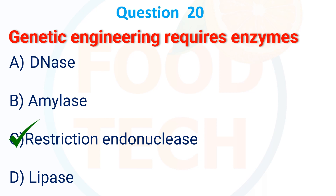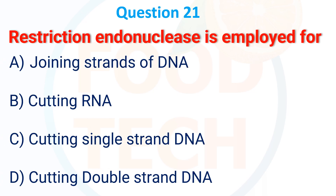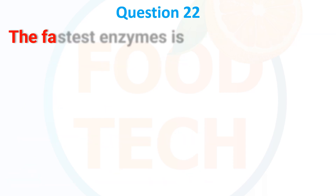Restriction endonuclease is employed for: A. joining strands of DNA, B. cutting RNA, C. cutting single-stranded DNA, D. cutting double-stranded DNA. The answer is D, cutting double-stranded DNA.